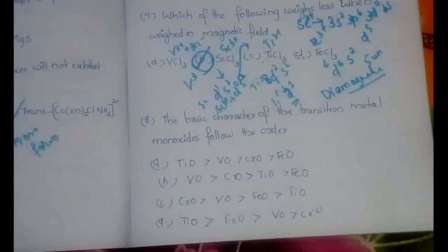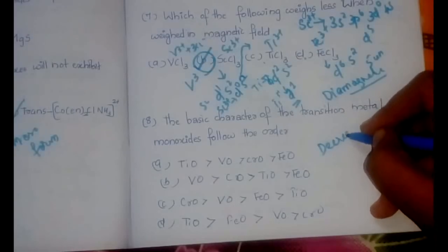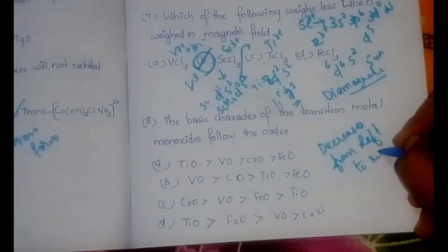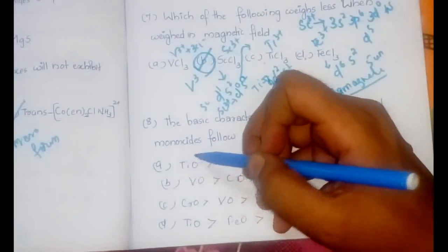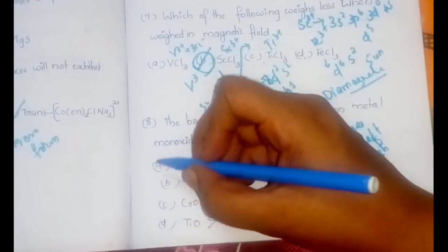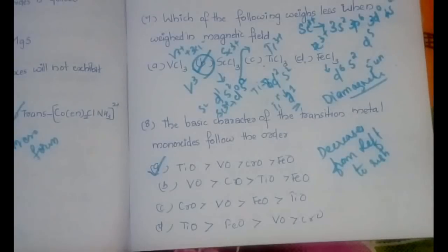Question 8: the basic character of transition metal monoxides follows which order? The basic character decreases from left to right across the transition series. Therefore, the order is TiO > VO > CrO > FeO, which is option A. TiO is more basic than VO, then CrO, and finally FeO.